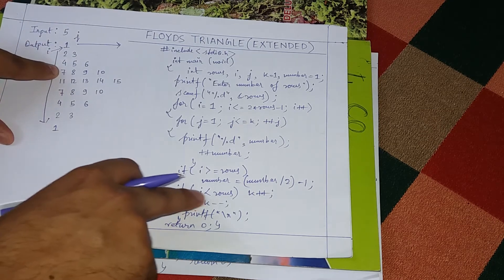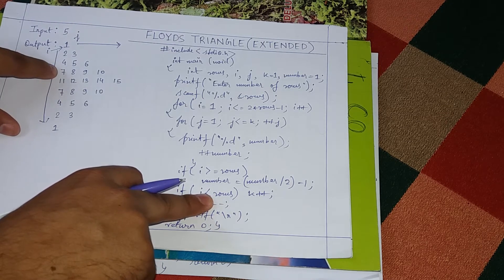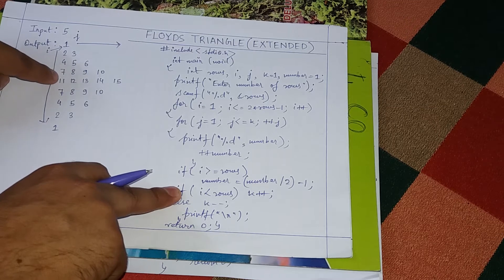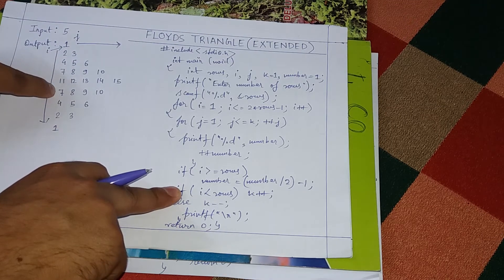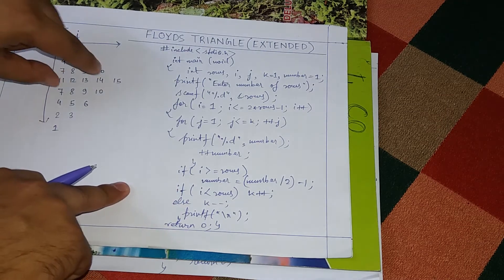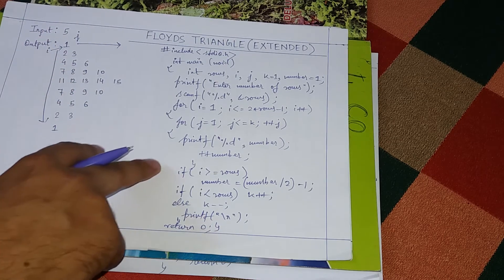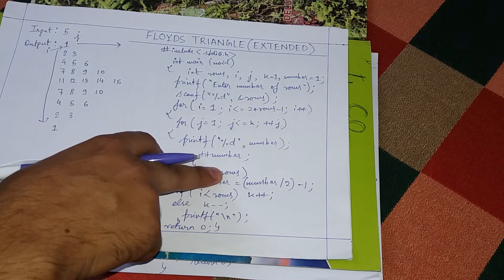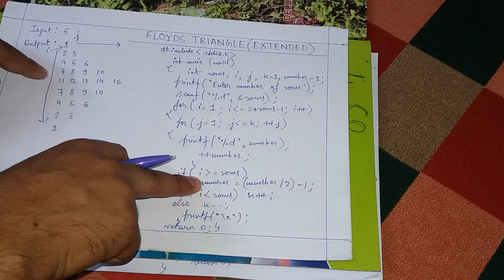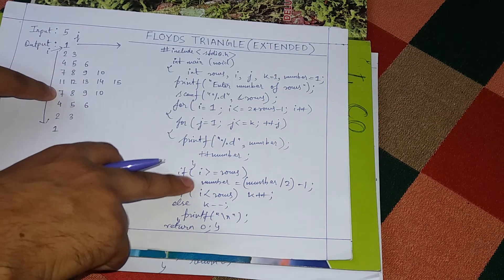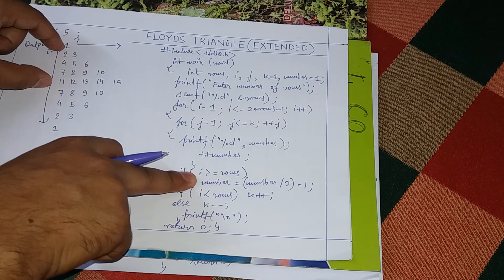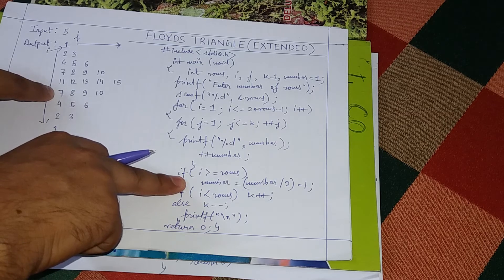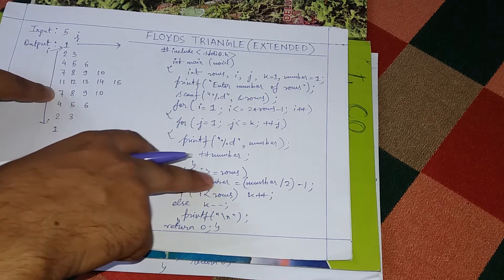Up to the fourth line i is less than the number of rows, so k increments each time. When it reaches the fifth line k is five. When i becomes six, instead of incrementing k it decrements — k goes from five to four, then three, then two. For the number: once i is greater than or equal to rows, the number resets. At that point number will be sixteen, so sixteen divided by two minus one equals seven. Printing then starts from seven.